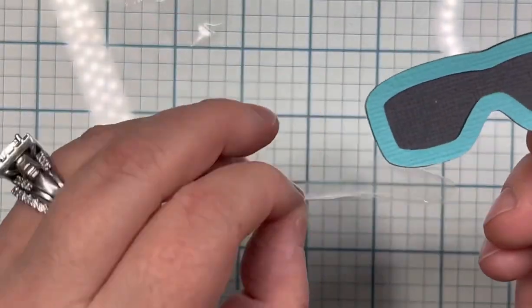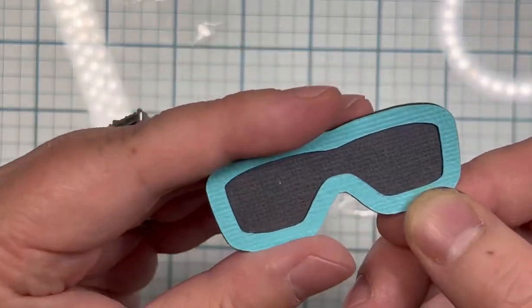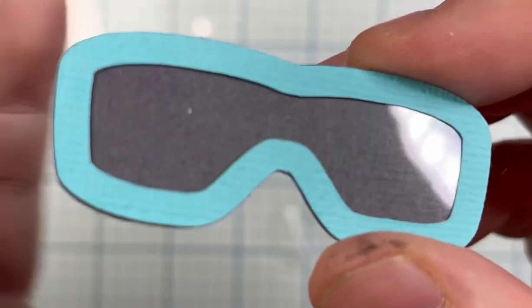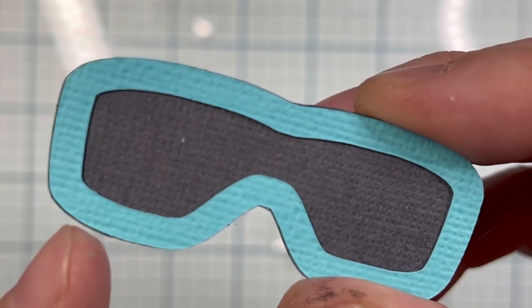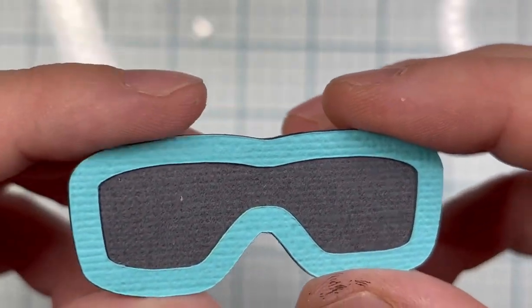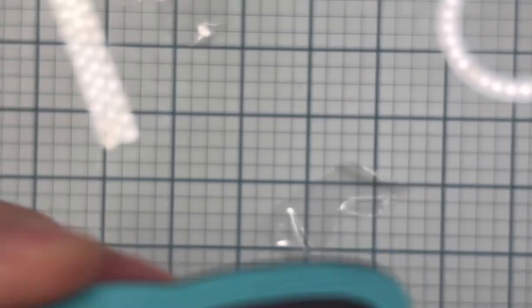All I do is I take super fine scissors and I will, let me find my camera, trim off this little edge here. You can shrink it in Design Space, but I don't always remember to do so.